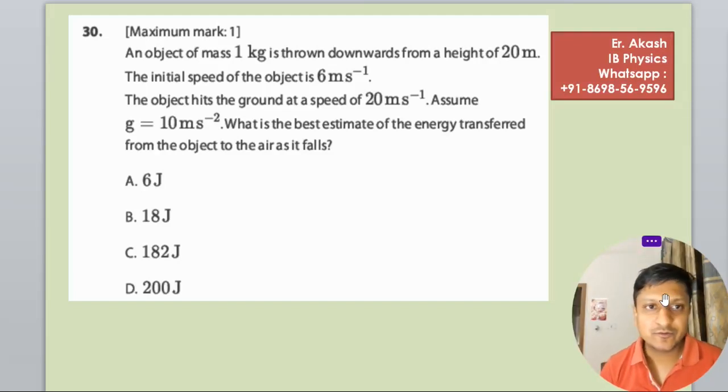Hello champions, how are you? We have another question. The question says that an object of mass 1 kg is thrown downward from a height of 20 meters.